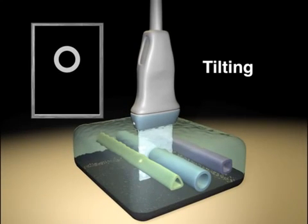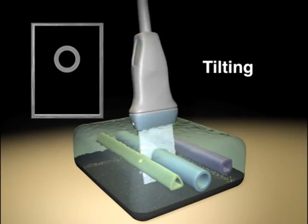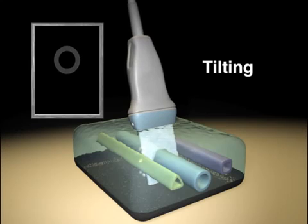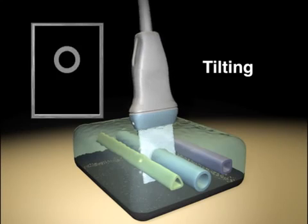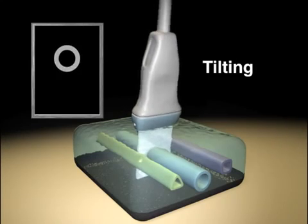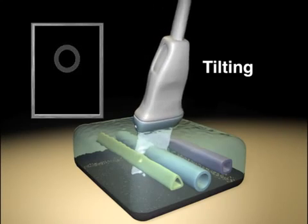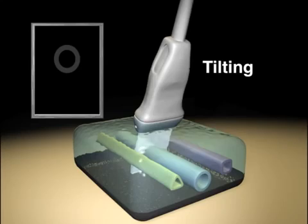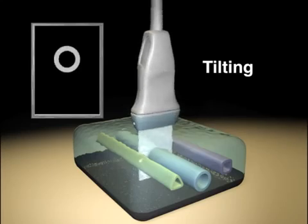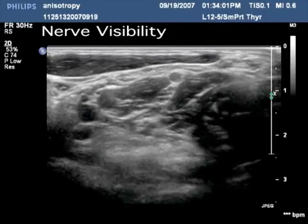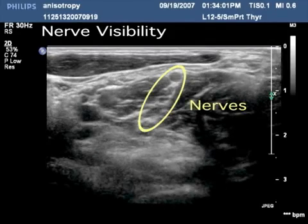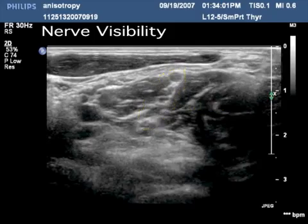In nerve imaging, it is critical to optimize transducer tilt to properly visualize nerve fascicles. Nerves are seen best when the scan plane is orthogonal to the course of the nerve.